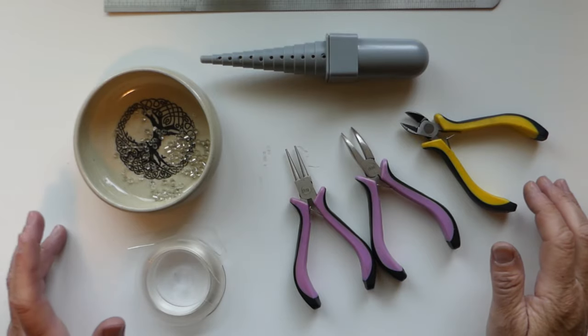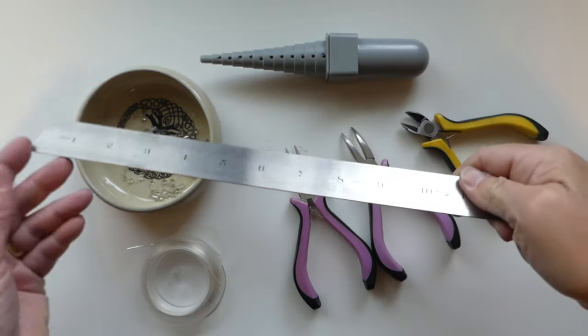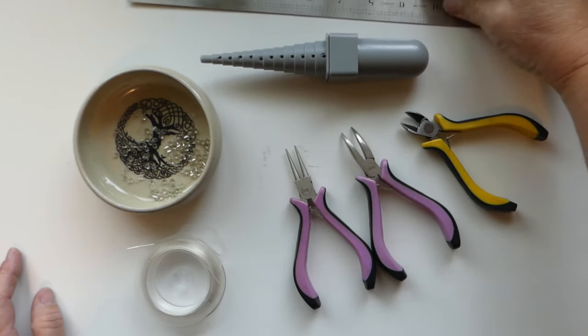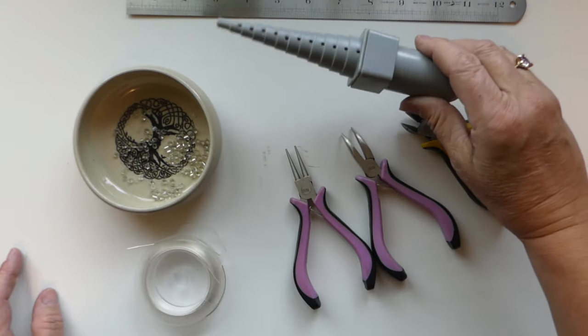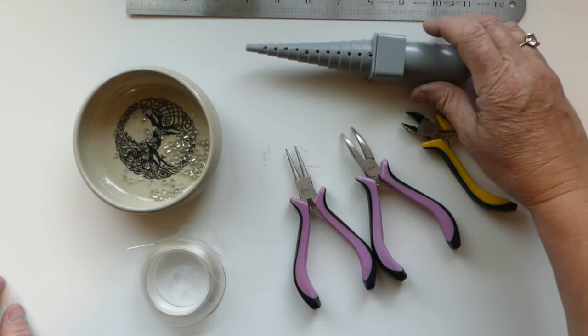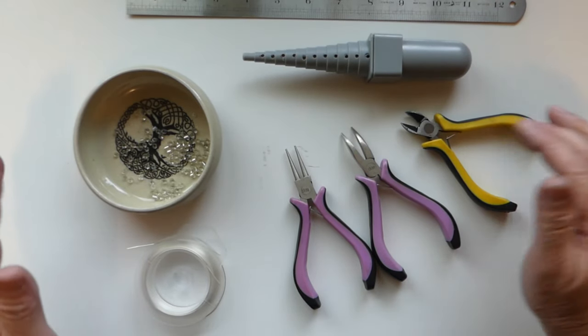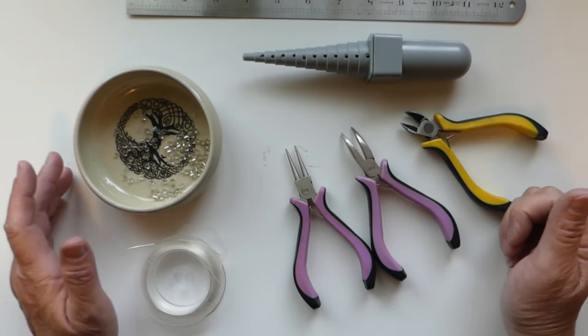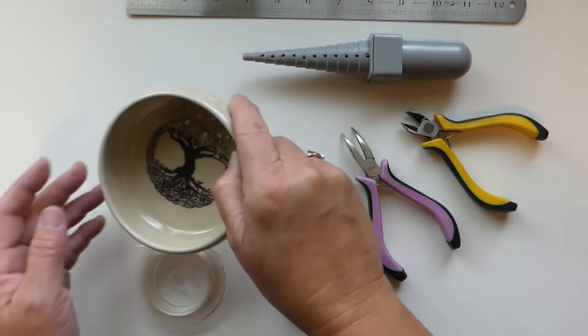Now the materials we're going to use today is a ruler, I've got a mandrel - this one is very inexpensive and I got it at the craft store, but you can use any round or circular item. We have got some clear seed beads here.